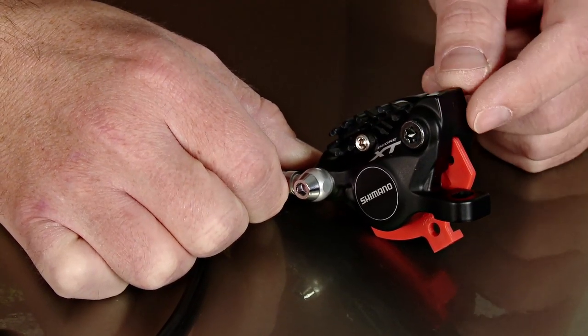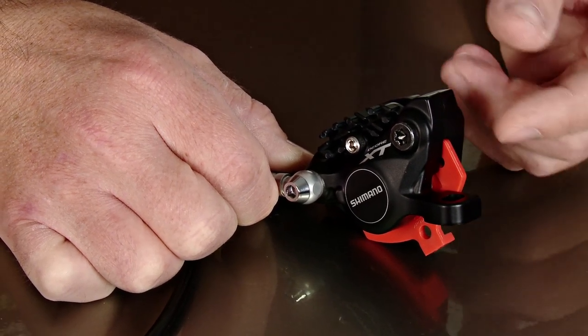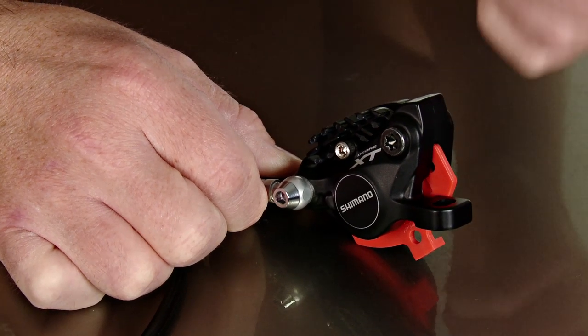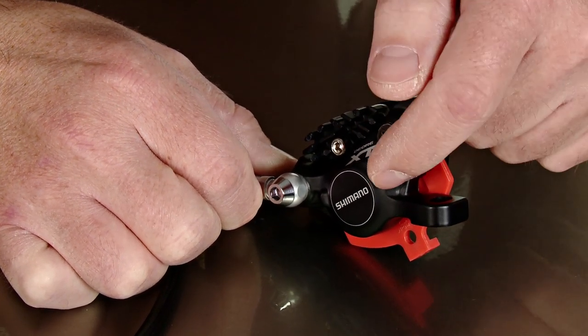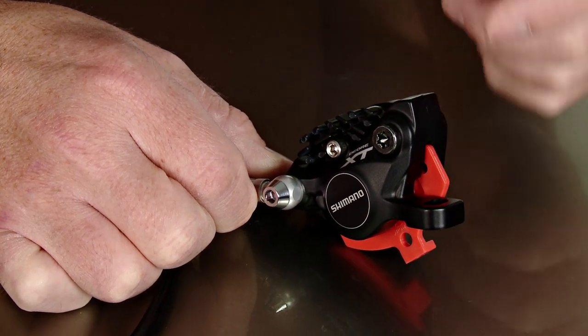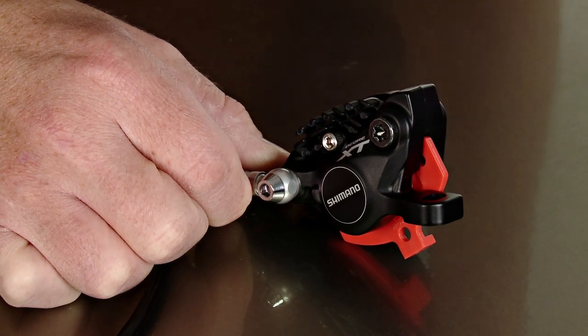Shimano's focus with this version of the XT disc brake was to remove heat from the system, therefore allowing better braking power over sustained intensive braking. They've done it three ways. It has ceramic pistons in the caliper body now so they dissipate heat better. The brake pads have aluminum cooling fins on them which remove heat from the system.